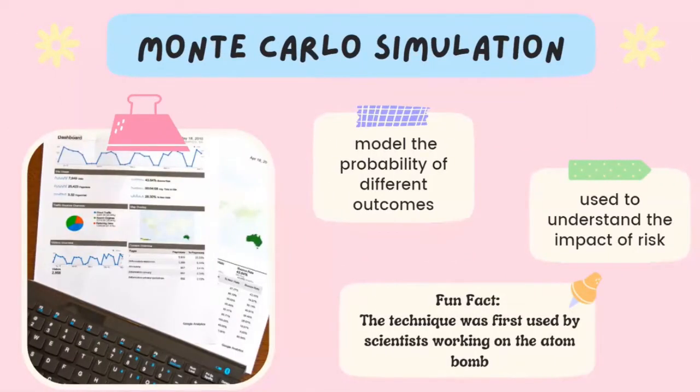First of all, let's talk about the Monte Carlo simulations. These simulations are used to model the probability of different outcomes in a process that cannot easily be predicted due to the intervention of random variables. It is a technique used to understand the impact of risk and uncertainty in prediction and forecasting models. It can also be used to tackle a range of problems in virtually every field such as finance, engineering, supply chain, and science. It is also referred to as a multiple probability simulation.